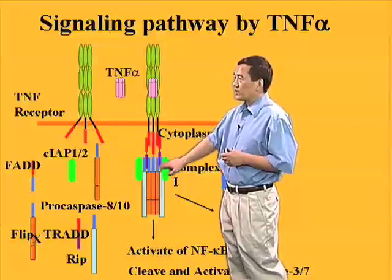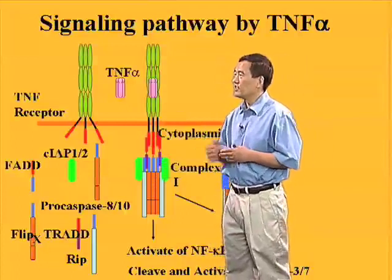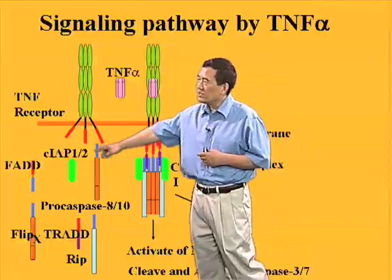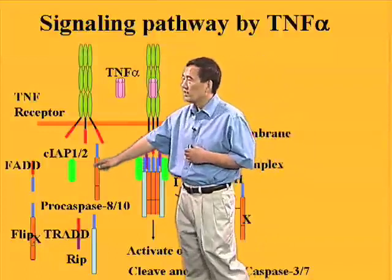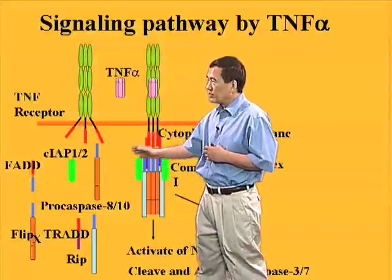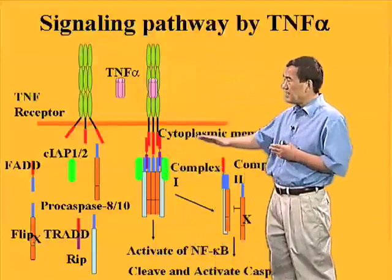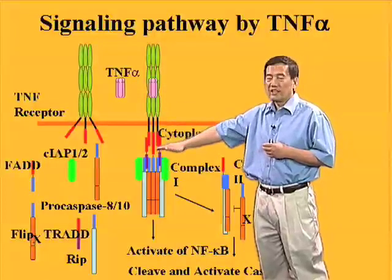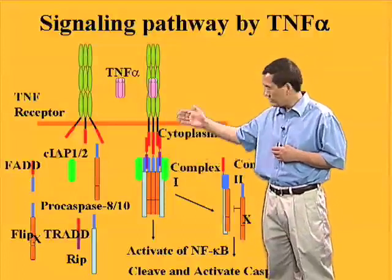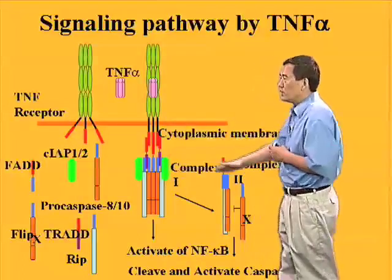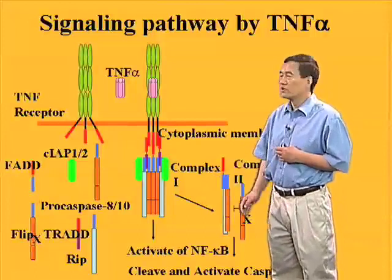There are two proteins initially identified in the signaling complex of the TNF receptor, called CIP1 and CIP2, first isolated by David Goodell's group as well as David Wall's group. How the TNF receptor complex switches from an NF-κB signaling complex, which is anti-apoptotic and pro-survival, to a caspase-8 activation complex, which is pro-death, is still a great mystery.